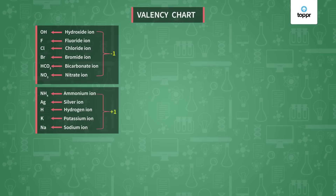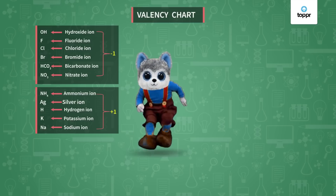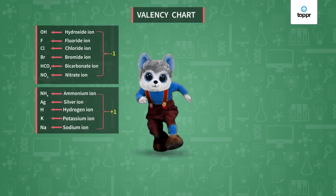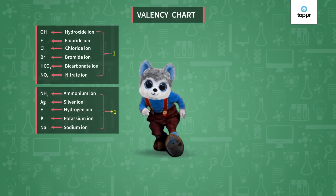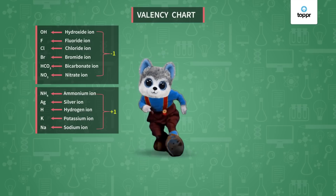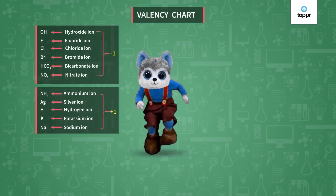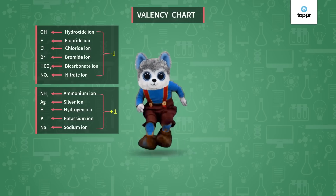We shall learn this group using the same tune. The song goes like this: Ammonium, Ag, H, K, Na — Ammonium, Ag, H, K, Na — their valency is 1.